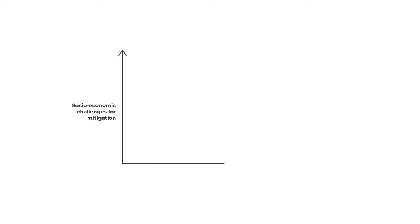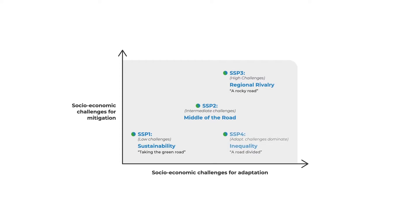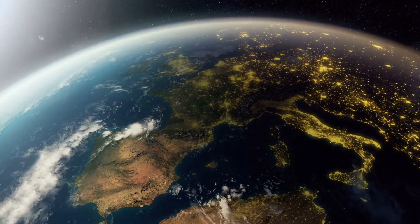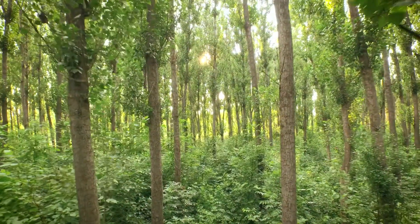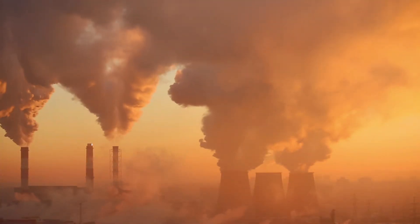The Global Shared Socioeconomic Pathways, or SSPs, used in assessments of the Intergovernmental Panel on Climate Change are five different storylines that describe how the global economy and society might evolve over the next 80 years. Crucially, the global SSPs are independent of climate change and climate change policy — they do not consider the potential impact climate change has on societal and economic choices.